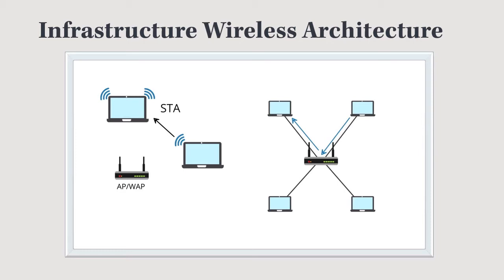Beyond that, we have what's called an infrastructure wireless architecture, where we actually have an access point or wireless access point that all of the devices are connecting to. With an infrastructure setup, instead of devices connecting directly to one another, they transmit to the wireless access point, and the wireless access point then directs the traffic.